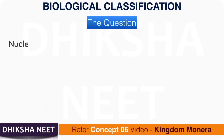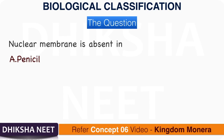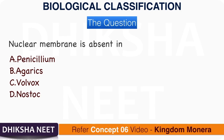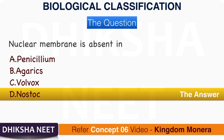Question 8: Nuclear membrane is absent in: A. Penicillium. B. Agaricus. C. Volvox. D. Nostoc. The answer is option D, Nostoc.